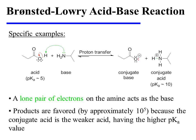Here's a specific example in which a carboxylic acid and an amine undergo a Brønsted-Lowry acid-base reaction. The amine is using its lone pair of electrons to form a new bond to the proton of the carboxylic acid. As this occurs, the oxygen-hydrogen bond dissociates and the red electrons collapse onto the oxygen, forming a carboxylate as the conjugate base and an ammonium ion as the conjugate acid. It's the lone pair of electrons on the amine that acts as the base in this particular reaction.